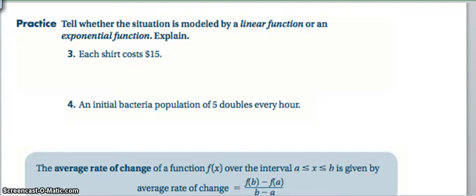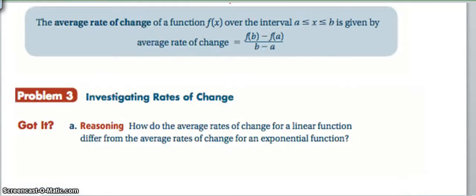Alright, so real quick, think about these two situations. If every shirt costs $15, is that linear or exponential? Hopefully you thought that that is linear. Then look at number 4. If a bacteria population doubles every hour, what do you think? Hopefully you thought to yourself that because we're doubling, it is an exponential situation.